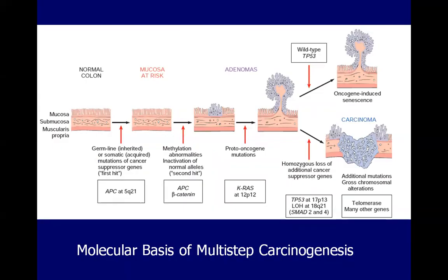Now let's go to the molecular basis of multi-step carcinogenesis. Always remember that tumors require an accumulation of mutations to give rise to tumorigenesis. In this particular model, this occurs in the formation of an adenoma leading to carcinoma — what we call the adenoma-carcinoma sequence. It starts with accumulation of a germline or somatic mutation serving as the first hit, with mutation towards APC. Remember, in tumor suppressor genes we need two alleles to be mutated for inactivation.